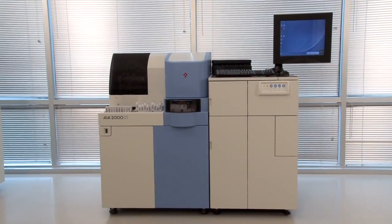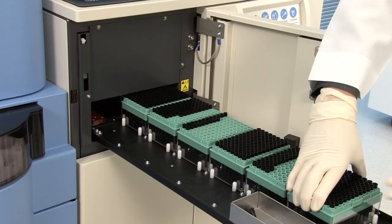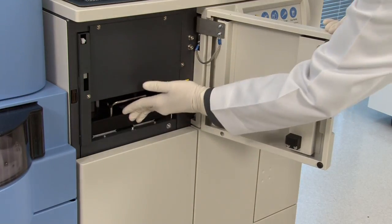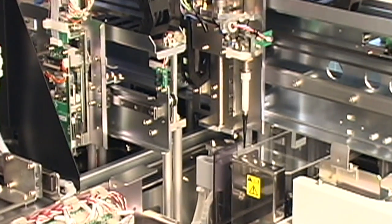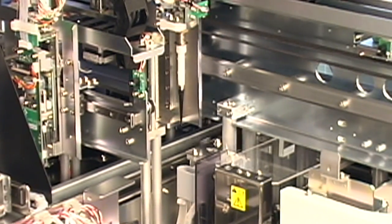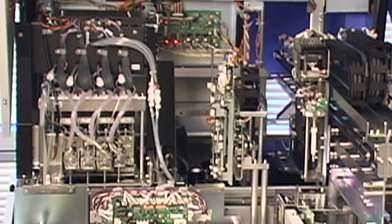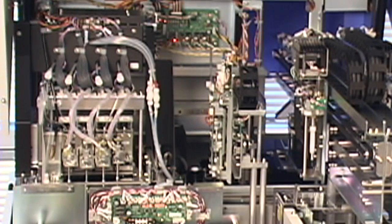To ensure the highest level of result integrity, the AIA-2000 features several built-in safeguards, including the conductive disposable pipette tips for automated sample level sensing and elimination of carryover. The system also features TOSO's exclusive dual clot detection, which will detect a clot at the beginning of the sample processing and again during the wash phase.